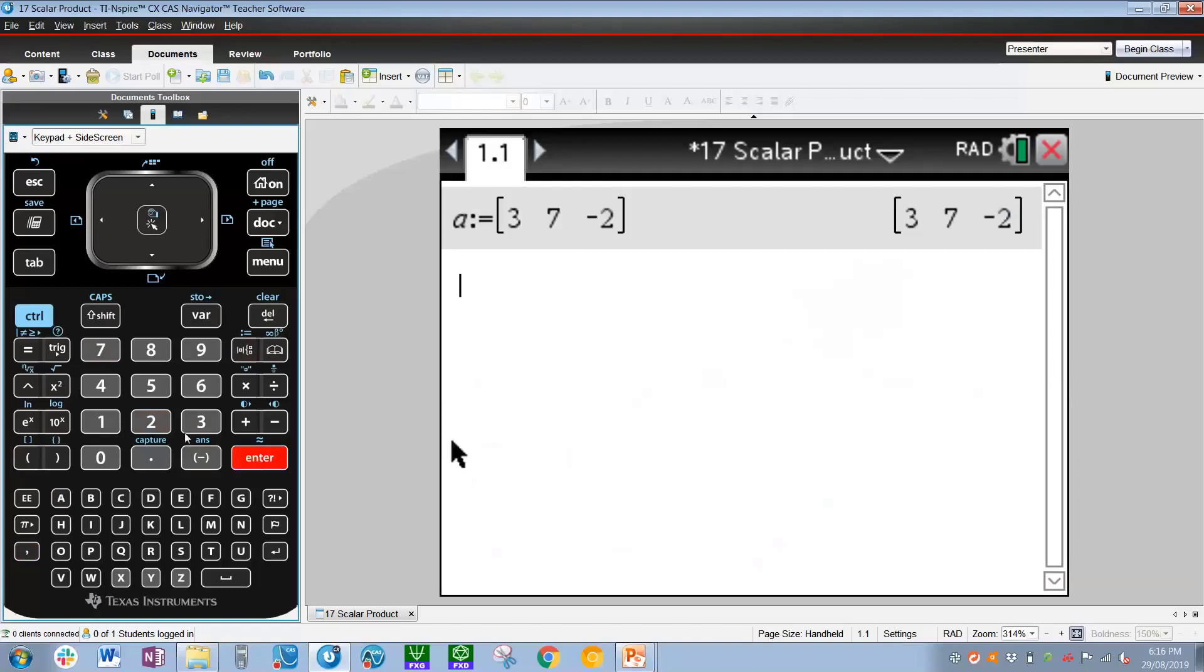And for vector b, we press b, ctrl equals, and ctrl template, then ctrl open bracket. We're going to go 2, -2, 3. Enter. OK, so we've now defined our vectors. And now let's get the fraction that we will have to inverse cos eventually.